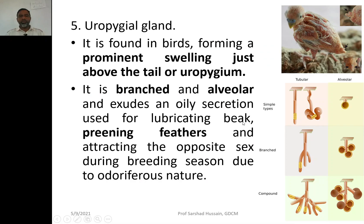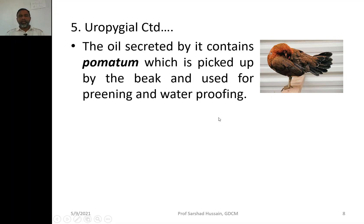The uropygial gland exudes an oily secretion used for lubricating the beak. Birds take the oil with their beak and preen their feathers — this process is called preening. In addition, this gland also attracts the opposite sex during breeding season due to its odoriferous nature. Preening makes the feathers waterproof so that water does not become entrapped in the feathers, keeping the bird's plumage lightweight and preventing the bird from feeling cold.